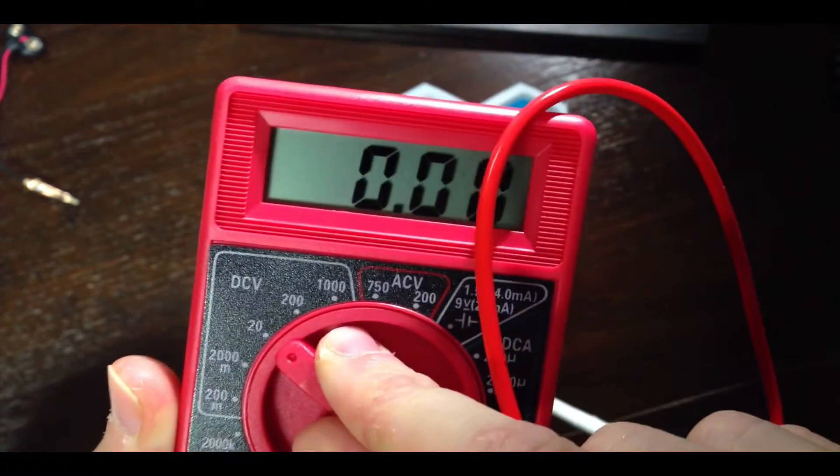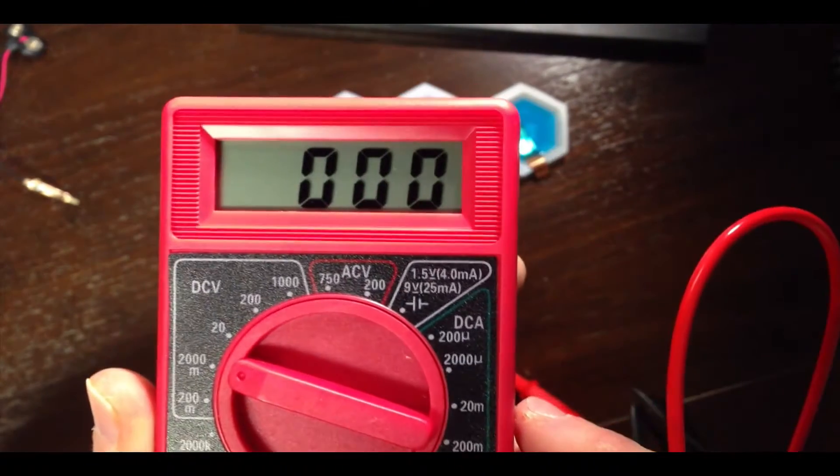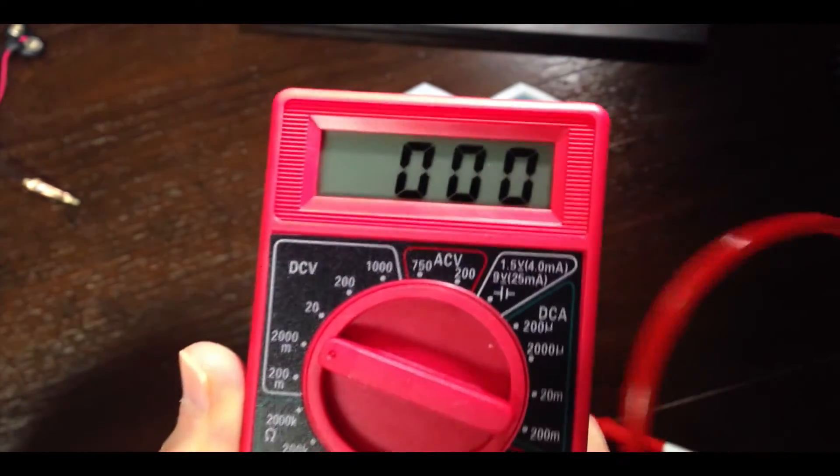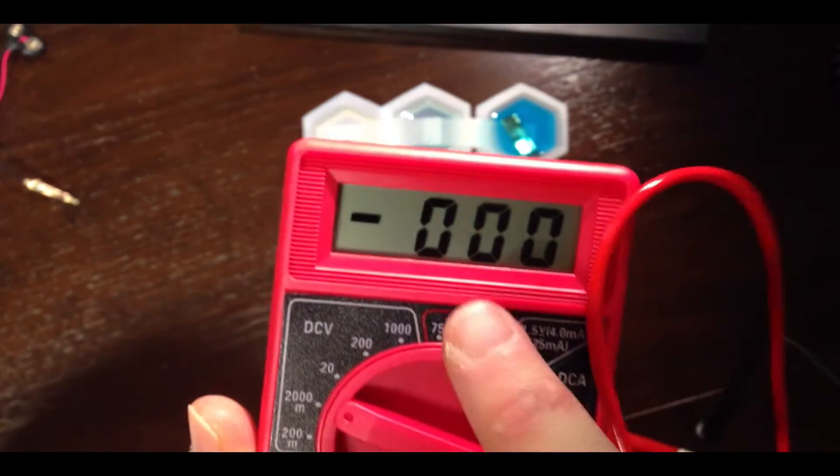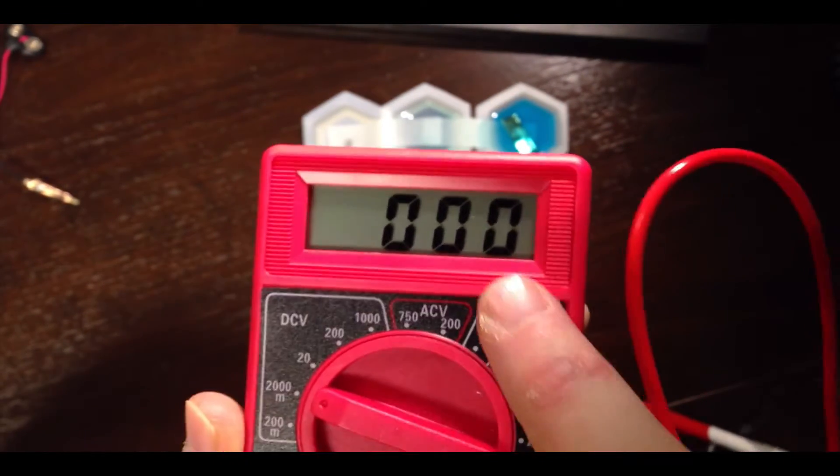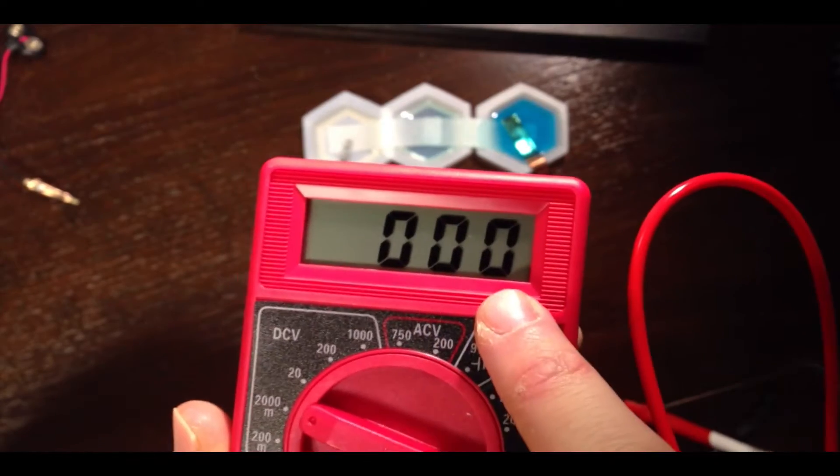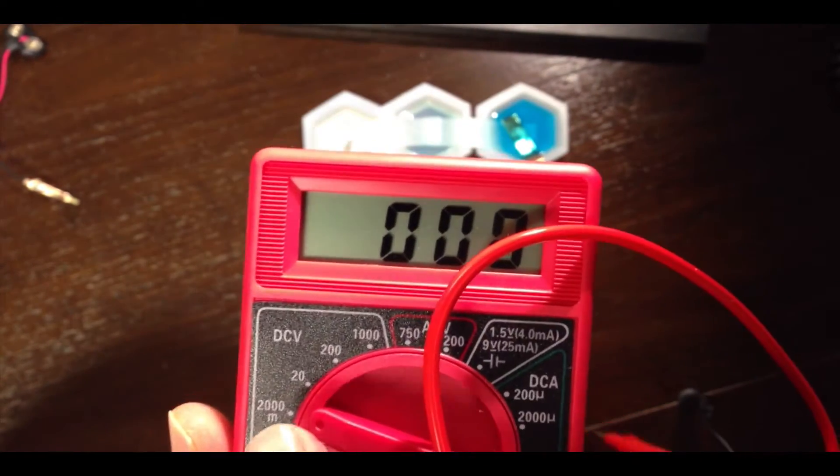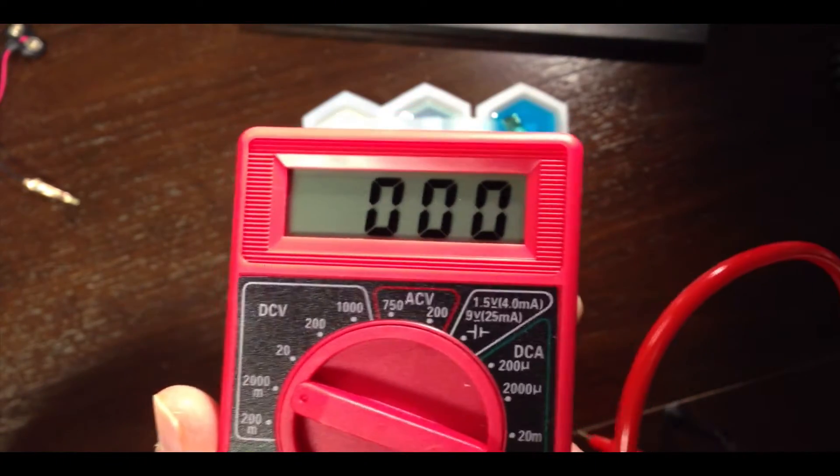If I kick it down to 2000m, what you should notice is that the decimal point disappeared, and now we're just looking at three zeros. The little m here indicates that now we're not showing volts up here, but we're showing millivolts. So the numbers up here will be much larger than the previous setting, just because we've kicked it down to millivolts instead of volts.